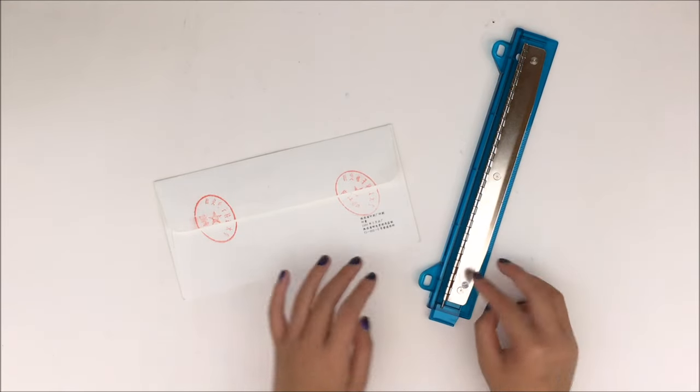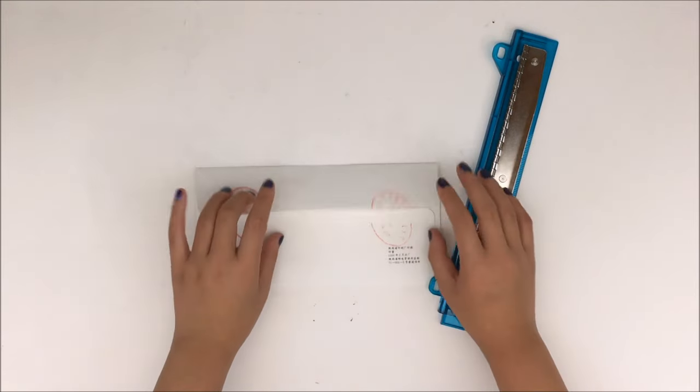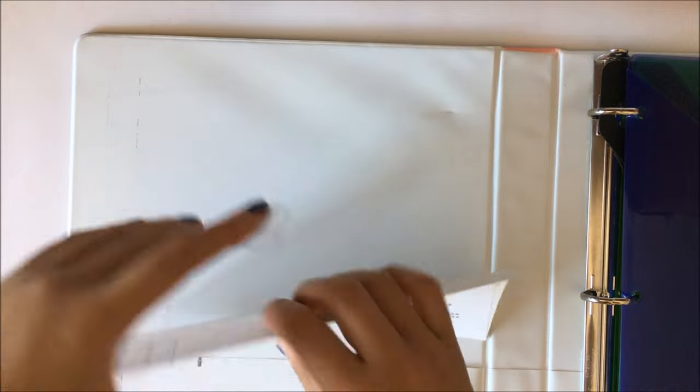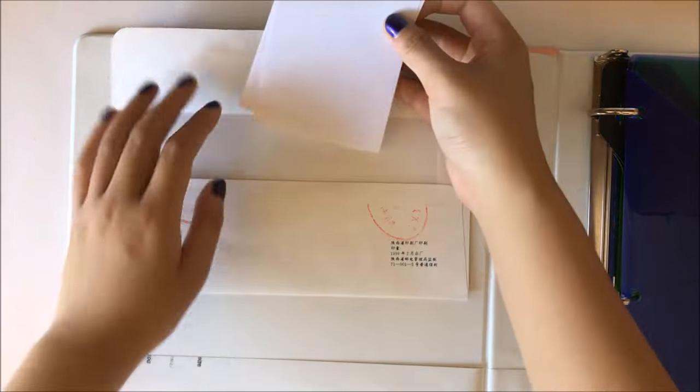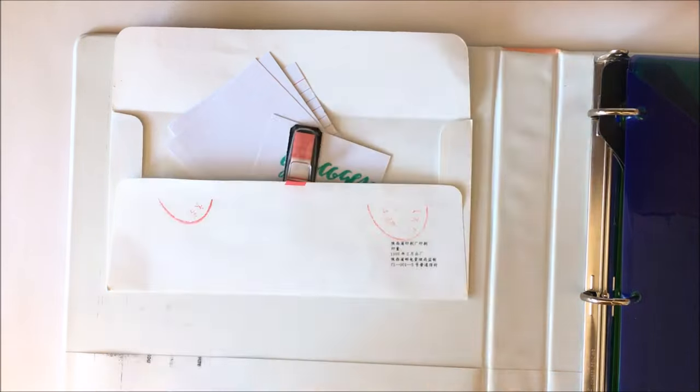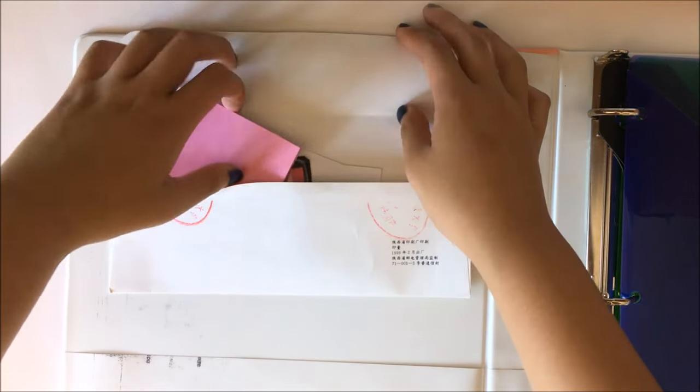If your hole punch doesn't have a cover to catch the little circles of paper, you can put them in an envelope. Just tape it inside one of the covers of the binder or put it inside the pocket. The envelopes can be used for storing other things too. You can put in index cards, flashcards to review, post-it notes, page flags, or whatever else you want.